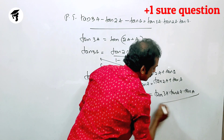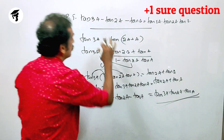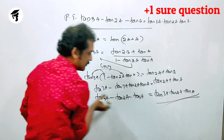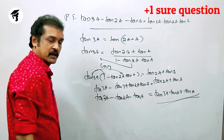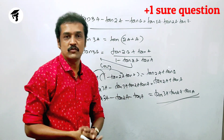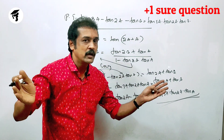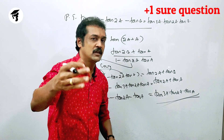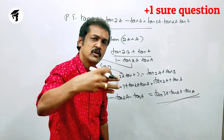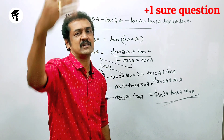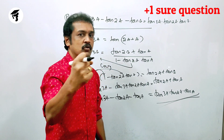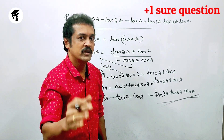Now, the result is proved. LHS is equal to RHS. Hence, the result is proved. Now, let's share this video. Don't forget to like and comment. Don't forget to share this video.